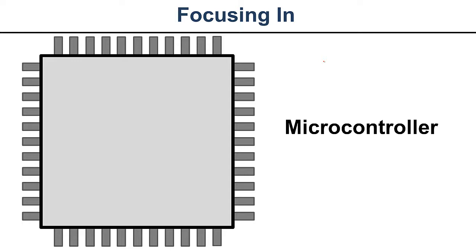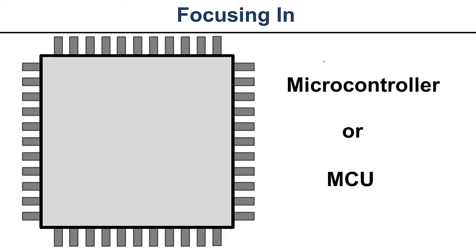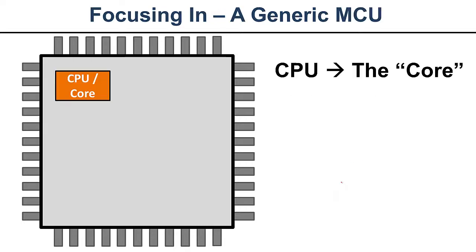Throughout the video, you're going to hear me use the word microcontroller, but the other acronym you may hear is MCU — it stands for microcontroller unit. It's very common in the industry to see MCU. The first part of the microcontroller we're going to look at and discuss is the central processing unit, also known as the core.